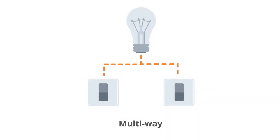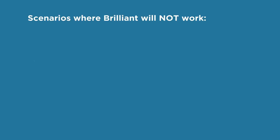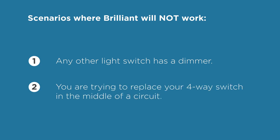If you do have a multi-way switch, there are a few wiring scenarios in which Brilliant will not work. Case number one is if any other switches on the same circuit is a dimmer. Case number two is if you are trying to replace your four-way switch in the middle of a circuit with a Brilliant Control.